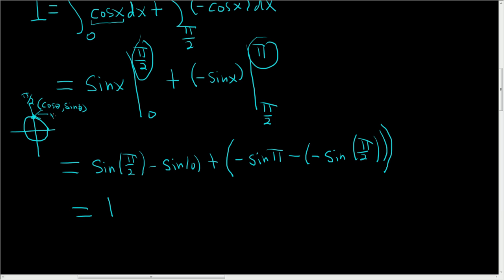And so the sine of pi over 2 is 1 because that's the y-coordinate there on the unit circle. Right? The y-coordinate is 1. y equals 1. Sine of 0, we're here. Here's the sine of 0. So the y-coordinate here is 0. So 1 minus 0 plus sine of pi.